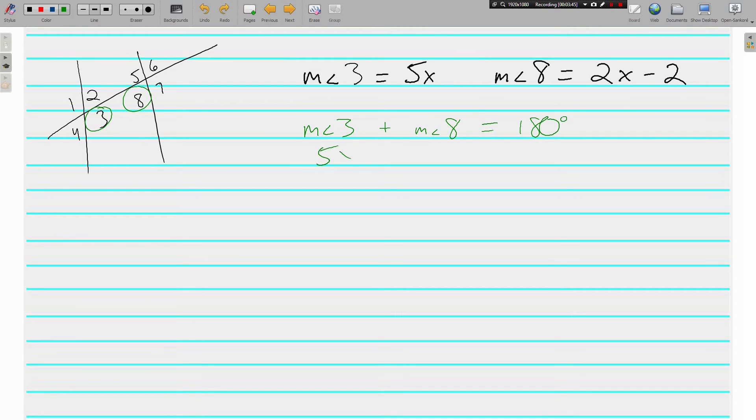Angle 3 is 5x, and angle 8 is 2x minus 2, as a sum of 180. Combine our like terms, and we get 7x minus 2 is equal to 180. Add 2 to both sides, and we get 7x is equal to 182. Divide both sides by 7, and we end up with a solution of x is equal to 26.